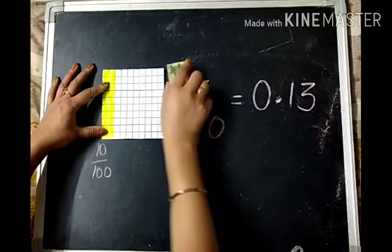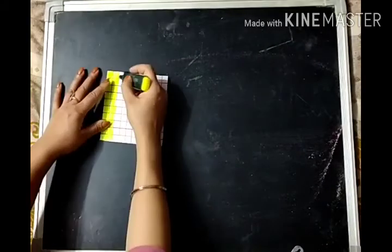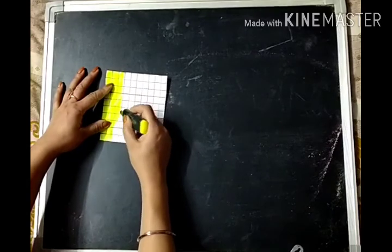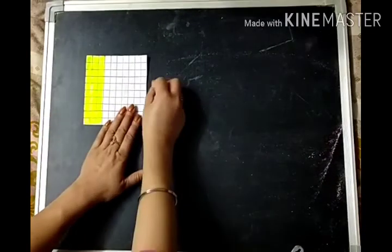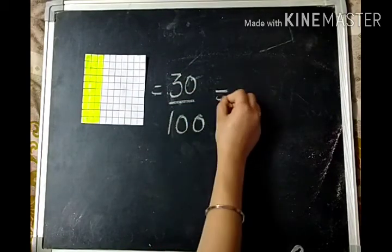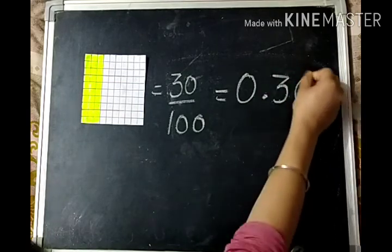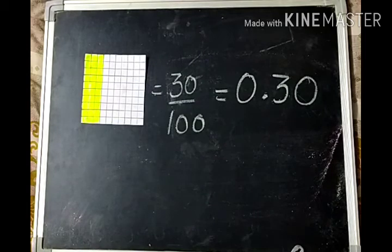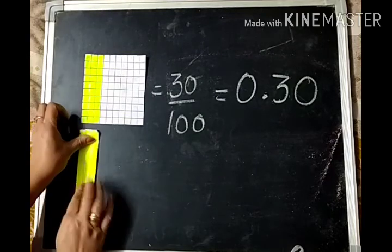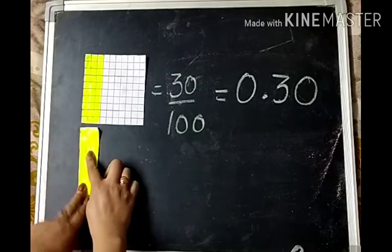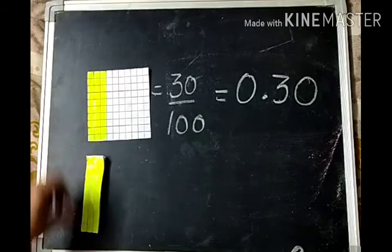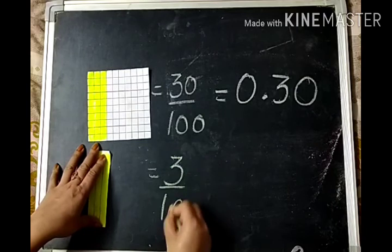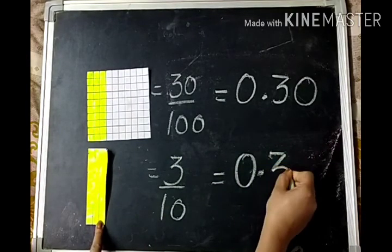If I shade this, this is twenty hundredths. And this is thirty hundredths. So the fractional value for this is thirty hundredths, or it can also be written as zero point three zero. Now look — if we compare this with tenths, thirty hundredths will look like three tenths. If we place three tenths on thirty hundredths, they will be the same. So this is equal to three tenths, and this will be written as zero point three.